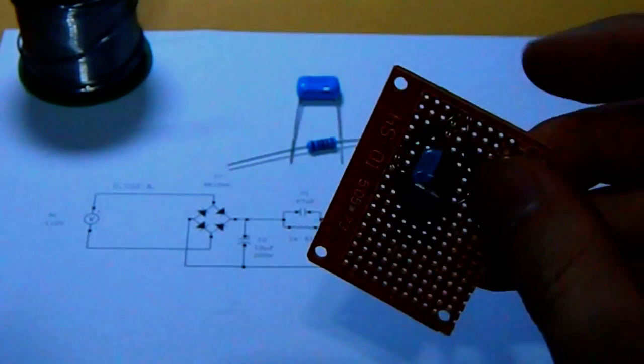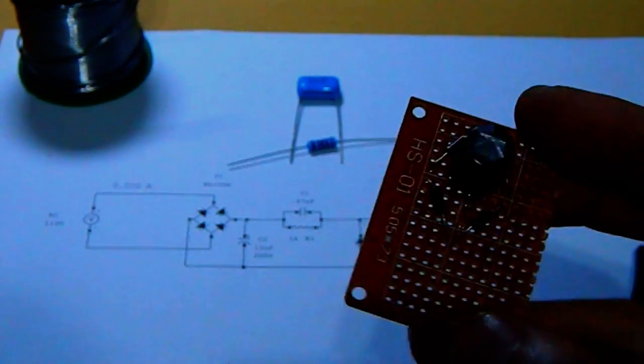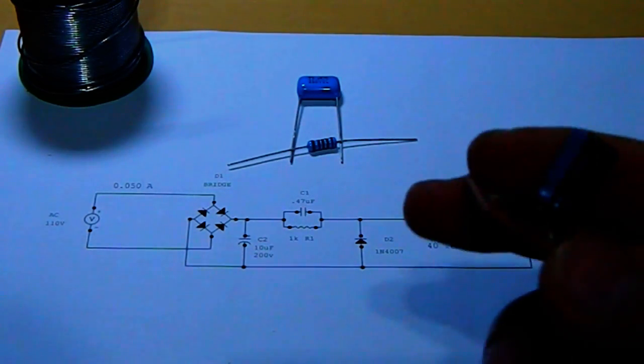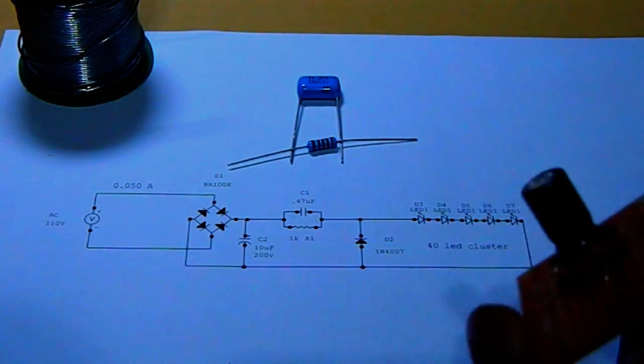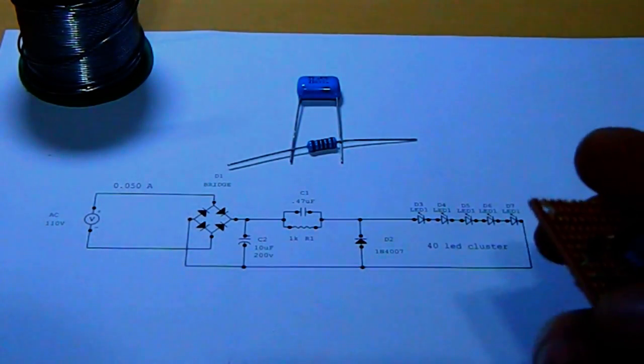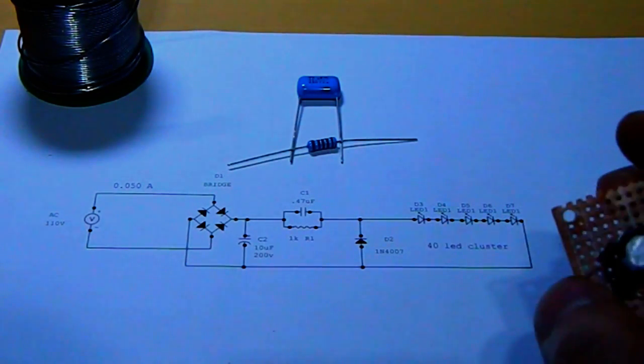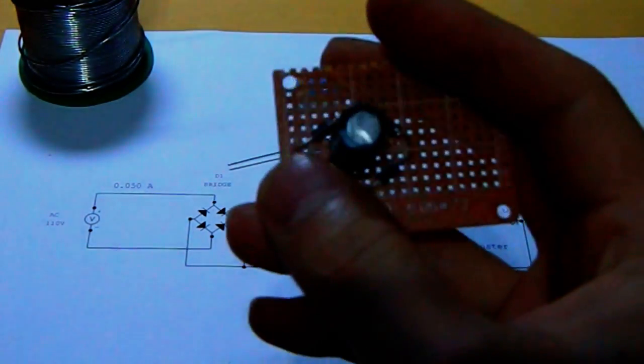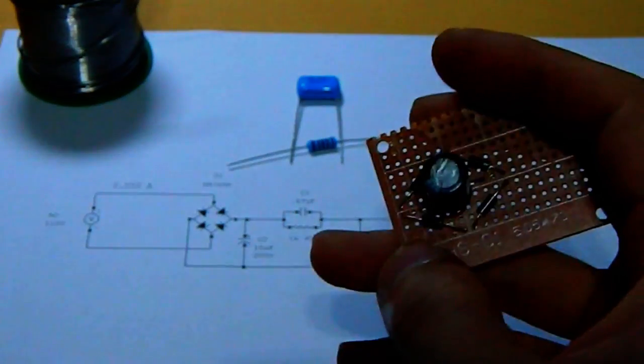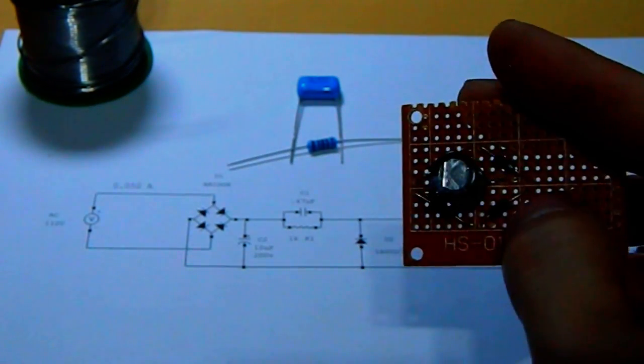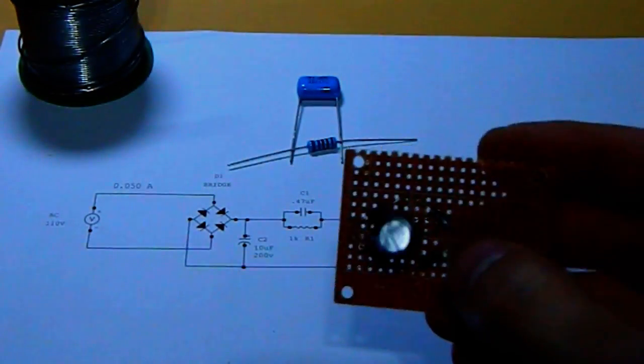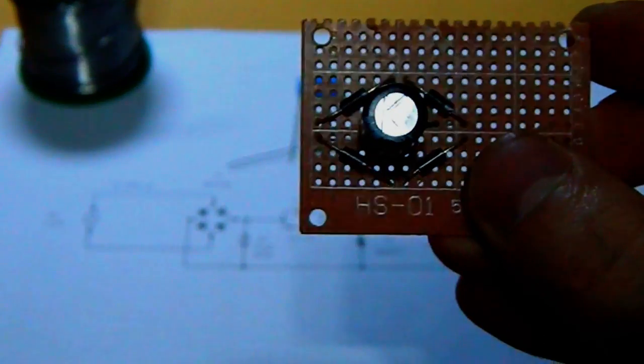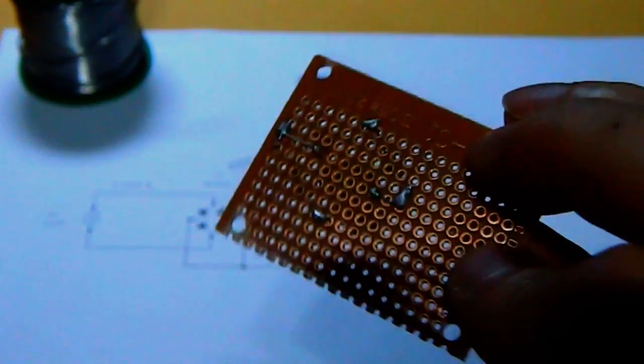Now the capacitor is on its place. Just make sure that you place it on the right position. The negative rail on the negative part of the bridge rectifier, and the positive on the positive side of the bridge rectifier. So just make sure of that.